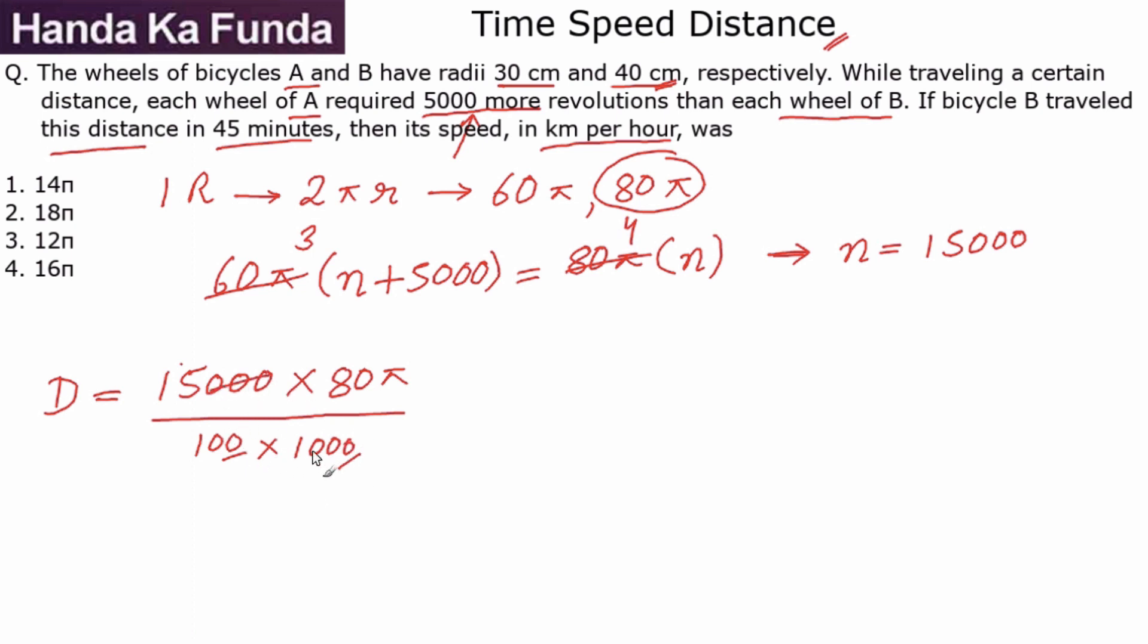Let's calculate this. Thousand times thousand gets cancelled, then 80 and 100 will give me 4/5, so I will have 4, 5, and 15 will get cancelled with 3, so I will have the distance as 12π kilometers.